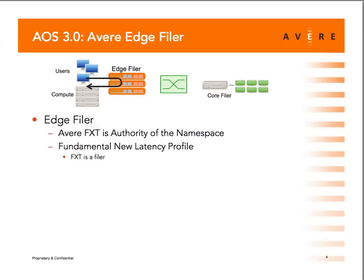On slide four, the main difference in the 3.0 release is that none of the synchronous requests from users ever leave our clustered edge filer — everything stays local. We've taken authority of the namespace, pulled it out of the core filer and moved it into our new edge filer. We now handle 100% of ops locally, which gives a fundamentally new latency profile — 100% local from a latency point of view.